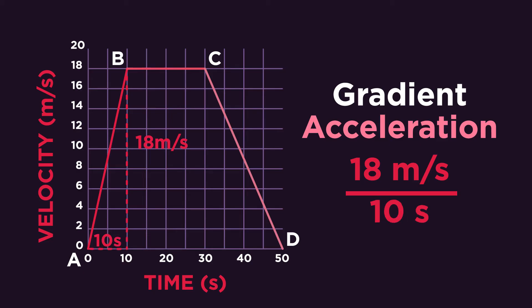A straight line will show a constant acceleration. A change in velocity of 18 meters per second divided by a change in time of 10 seconds gives us an acceleration of 1.8 meters per second per second. What do you think the acceleration between points B and C and C and D is? Pause now and have a go.